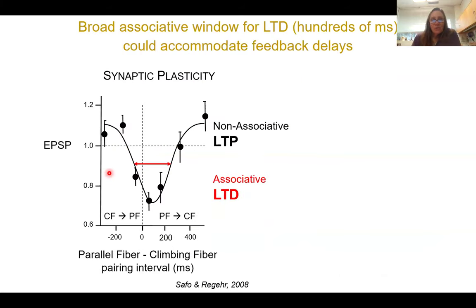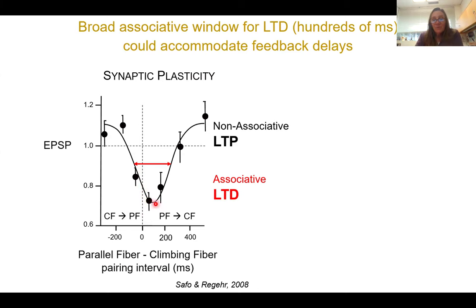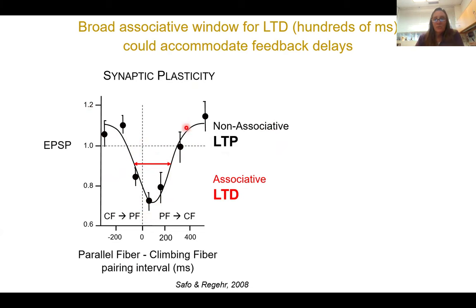For the eye movements we studied, that delay between Purkinje cell activity causing an eye movement and the resulting image motion reported by climbing fibers is quite long — about 120 milliseconds in monkey and very similar in mice. This bothered me: it seemed like a long delay compared to the tens of milliseconds reported as necessary for controlling associative plasticity. Work by Safo and Regehr in 2008 showed a broad associative window of a couple hundred milliseconds for LTD — climbing fibers delayed 50 to 150 ms relative to parallel fiber, or even preceding — which seemed to potentially accommodate these feedback delays.